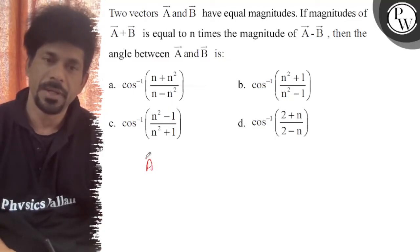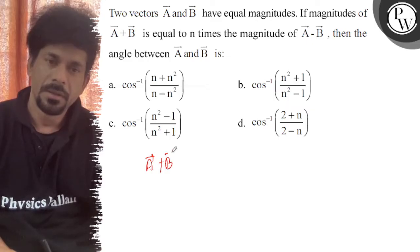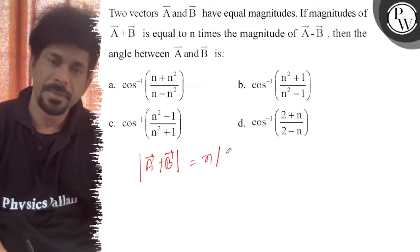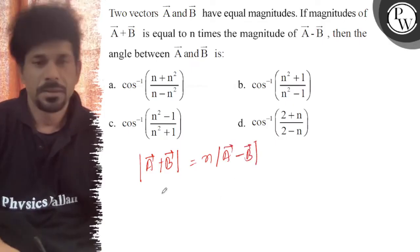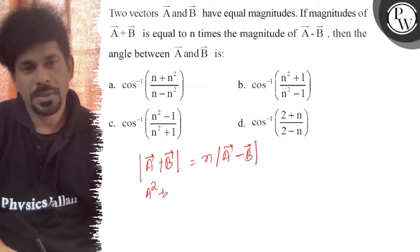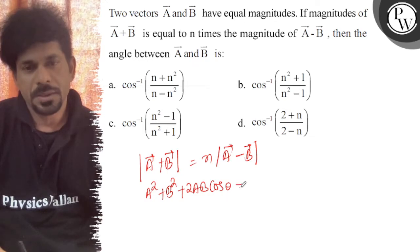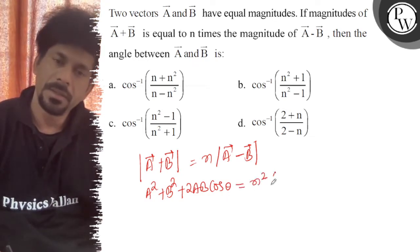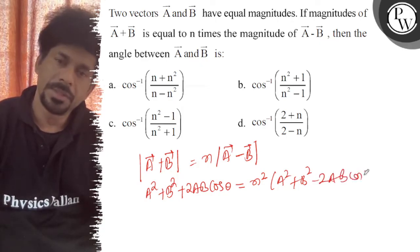A plus B ka magnitude is n times of A minus B ka magnitude. So, A square plus B square plus 2AB cos theta is equal to n square A square plus B square minus 2AB cos theta.